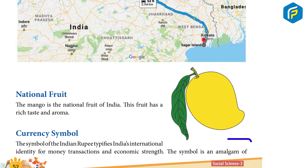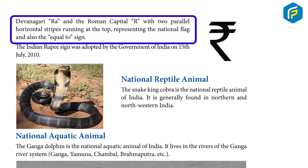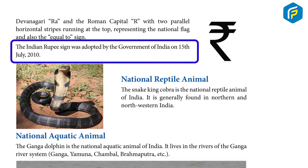Currency Symbol: The symbol of the Indian Rupee typifies India's international identity for money transactions and economic strength. The symbol is an amalgam of the Devanagari letter Ra and the Roman capital R, with two parallel horizontal stripes running at the top, representing the national flag and also the equal-to sign. The Indian Rupee sign was adopted by the Government of India on 15th July 2010.